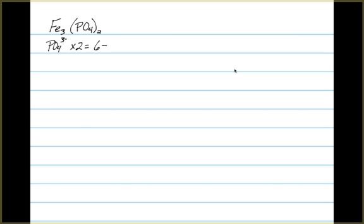We know that phosphate has a 3 negative oxidation state and that there are two of them. That means that the total negative charge in the compound from the phosphate must be 6 negative.